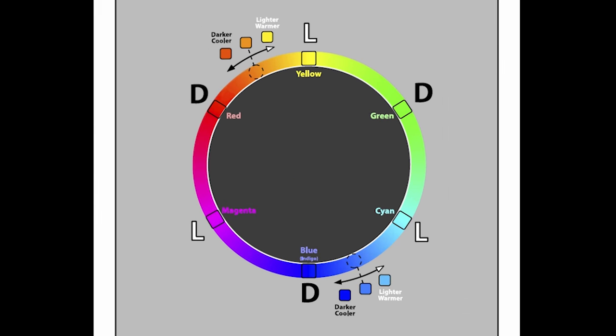So in this example here, you can see that orange is the target color up in the top left. And if I wanted to make that color cooler, I would shift it towards red. If I wanted to make that color warmer, I would shift it towards yellow. In the bottom right example, I have this blue color, and if I wanted to make that cooler, I'd shift it towards indigo. If I wanted to be warmer, I'd shift it towards cyan.